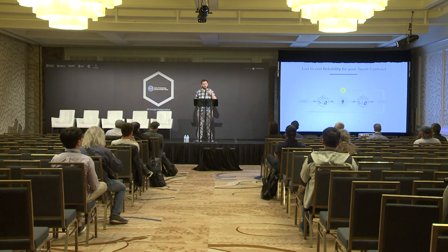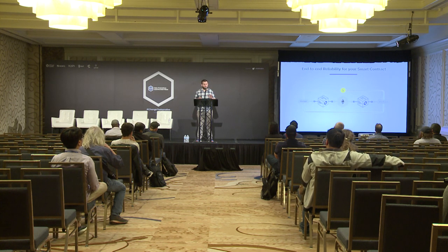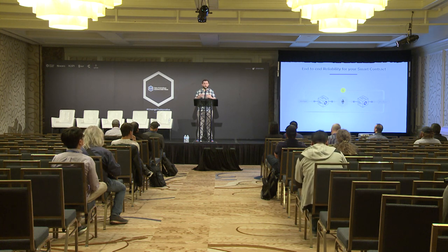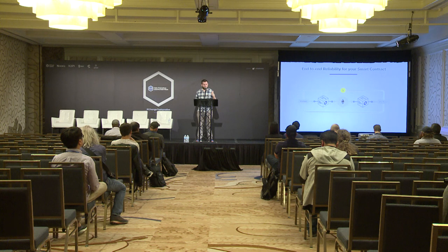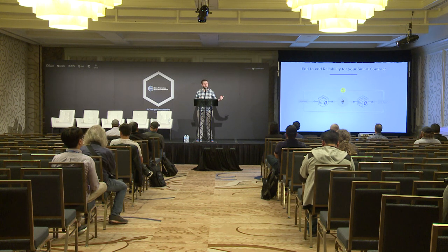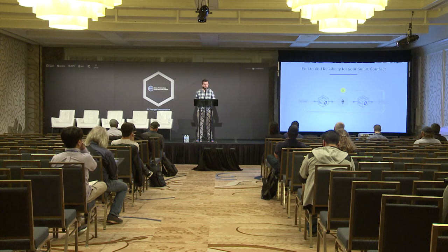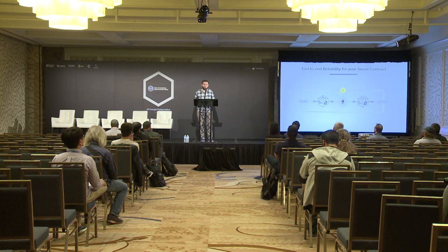Traditional digital agreements have tons of fallback systems — delays, reversals — allowing people to fix problems. Smart contracts are much more deterministic: one of their greatest benefits is that they execute as written in a highly predictable, reliable way. So in a universe of deterministic digital agreements, the triggering mechanism is even more important than elsewhere, because it's very difficult to reverse.